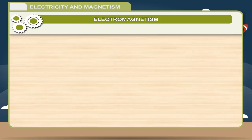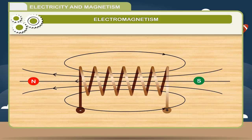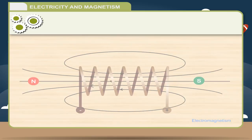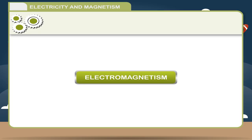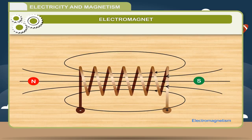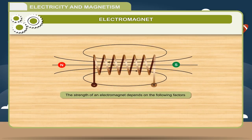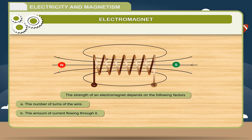Electromagnetism: The phenomenon of producing a magnetic field around a wire due to the passage of electricity through it is known as electromagnetism. An electromagnet is a temporary magnet formed by inserting a soft iron bar within a current-carrying solenoid. The strength of an electromagnet depends on: the number of turns of the wire, the amount of current flowing through it, and the nature of core material.